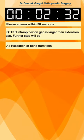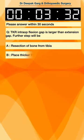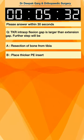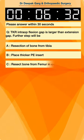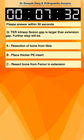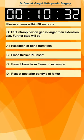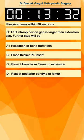In total knee replacement, the intraoperative flexion gap is larger than the extension gap. The options for the next step are: resection of bone from the tibia, placing a thicker PE insert, resecting bone from the femur in extension, or resecting the posterior condyle of the femur.